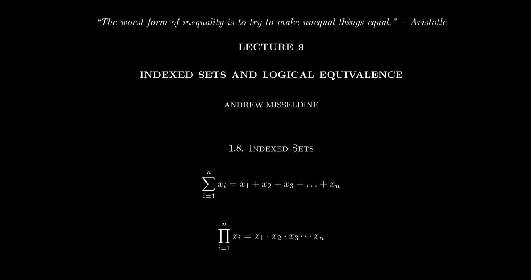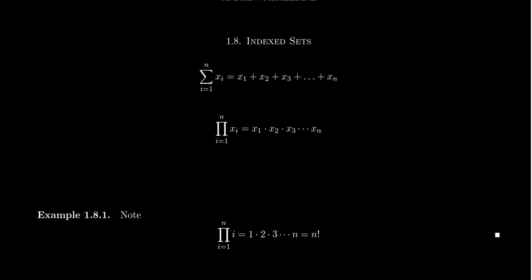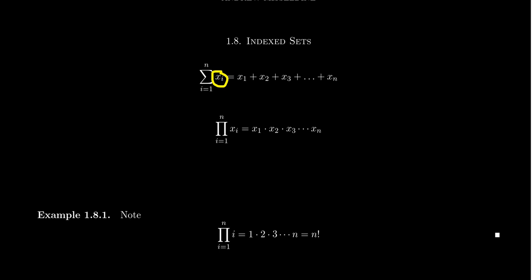To describe what an index set is, we have to first remind ourselves of the sigma notation that we've probably seen previously in calculus. We often see this notation where you see this capital sigma. There's some stuff on the bottom, some stuff on the top, and then a sequence of numbers. This x_i represents the general formula of some sequence of numbers, depending on a variable, which in this case we've indicated as i. That i also appears on the bottom and represents the index of the sum.